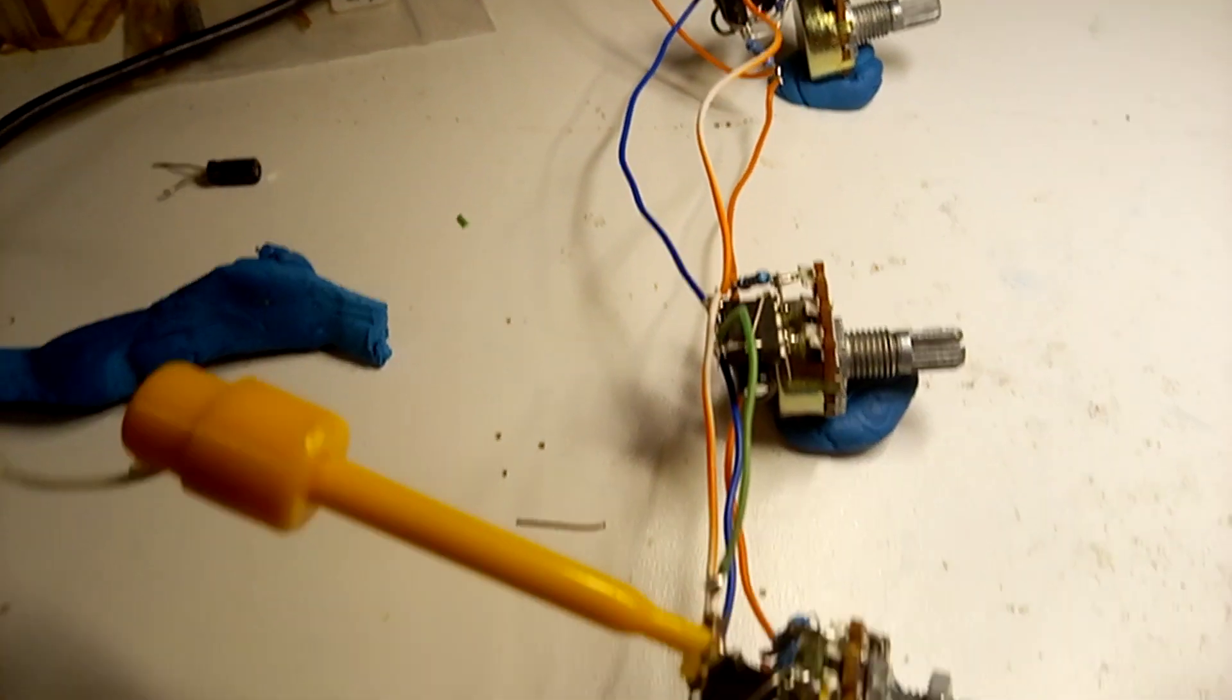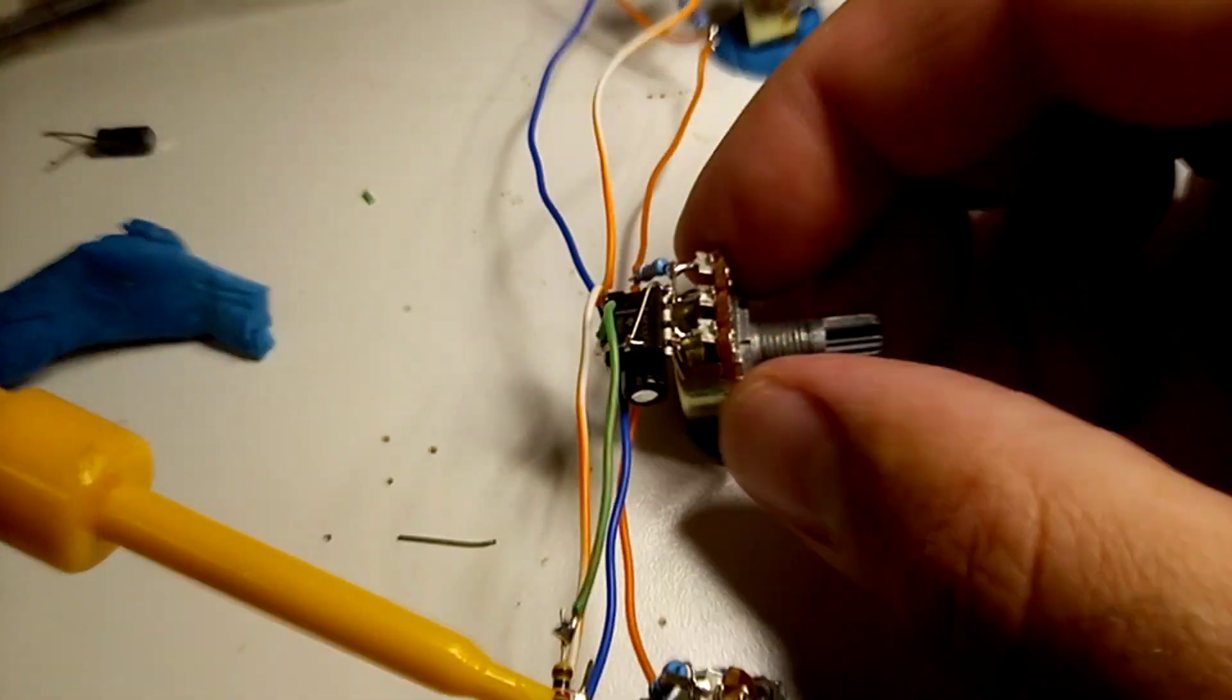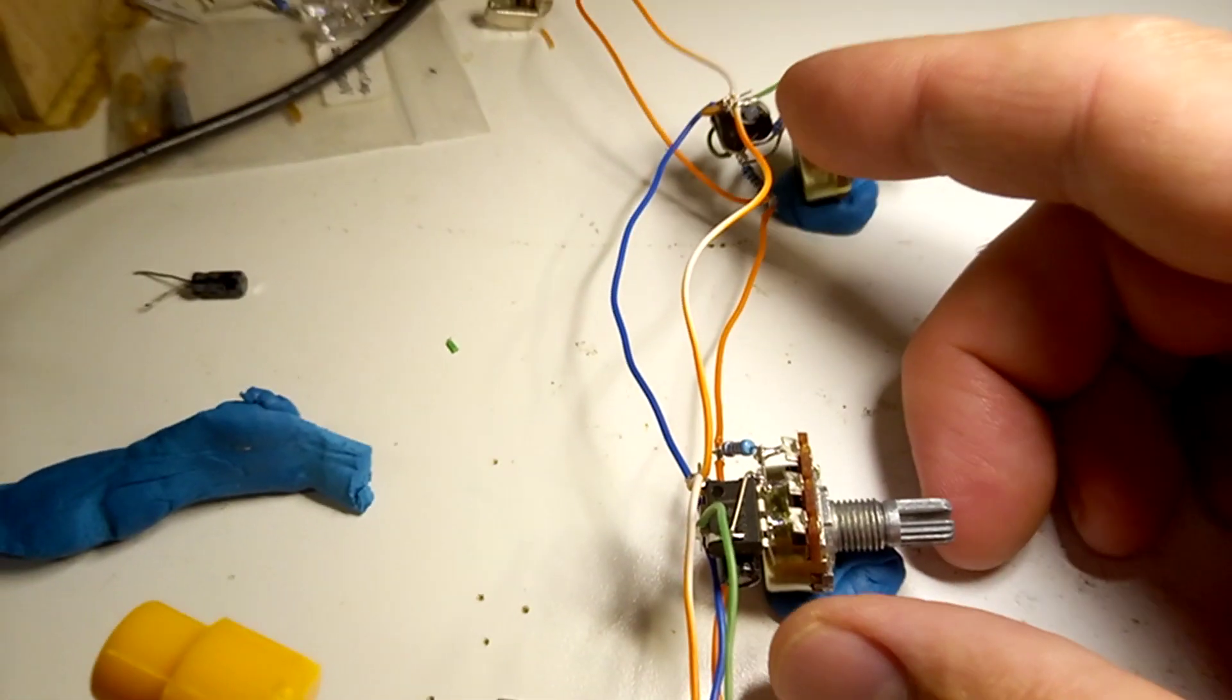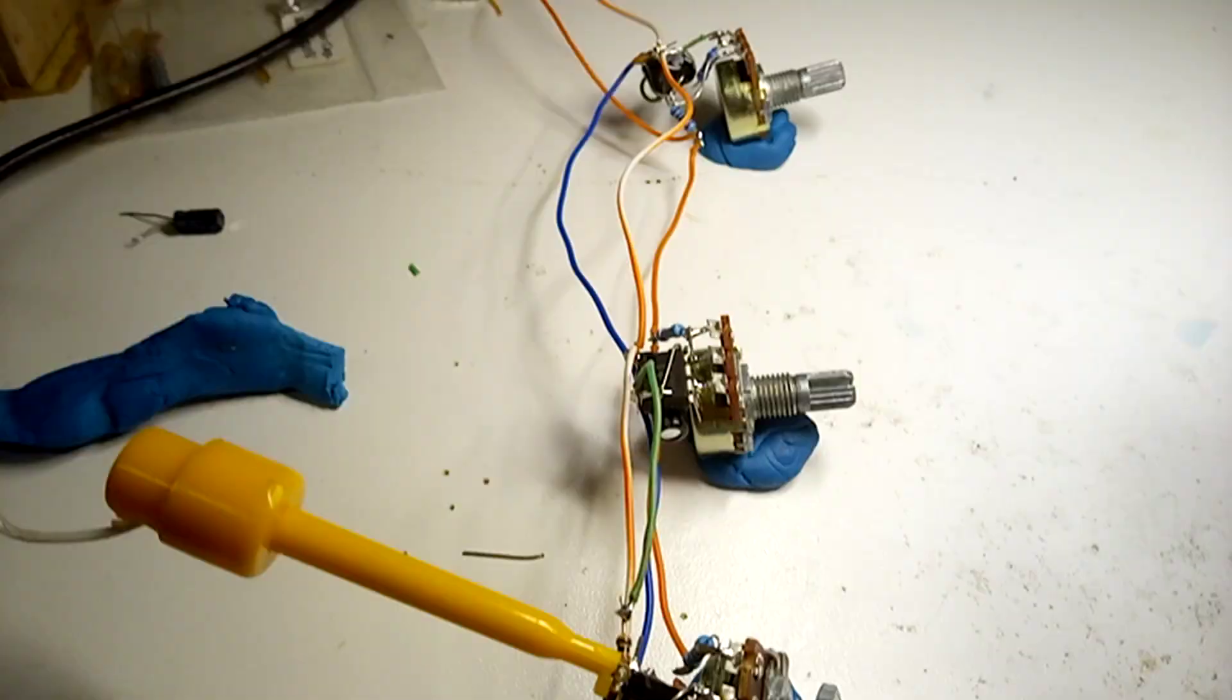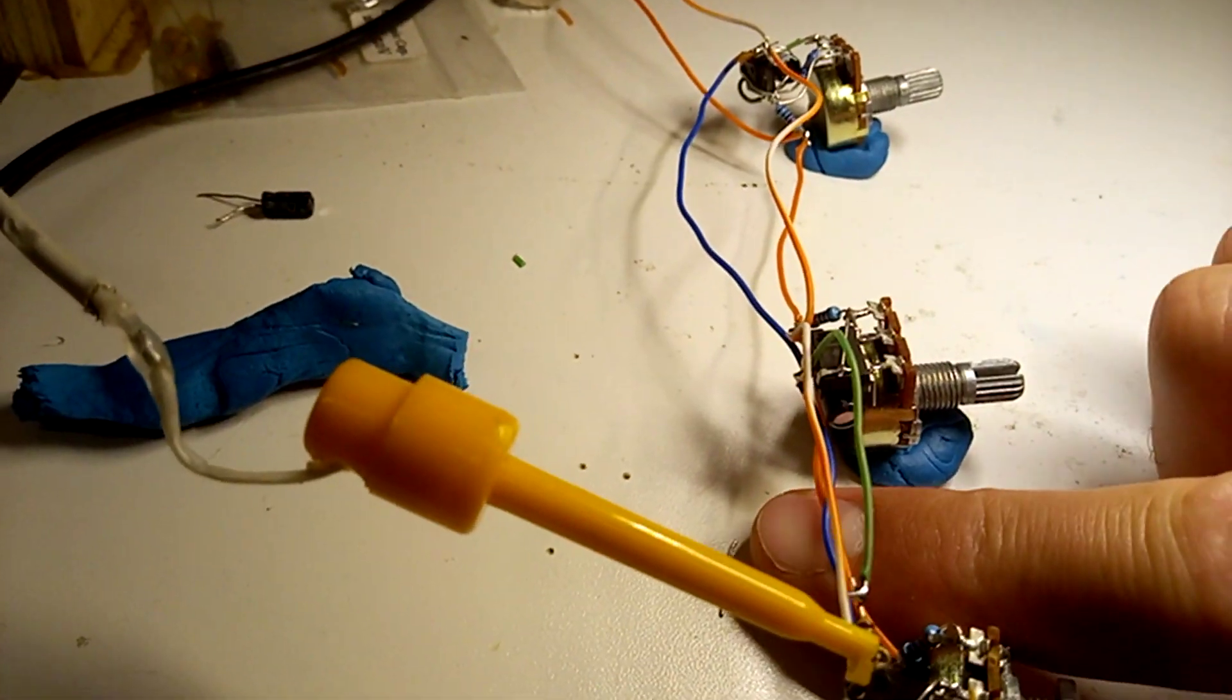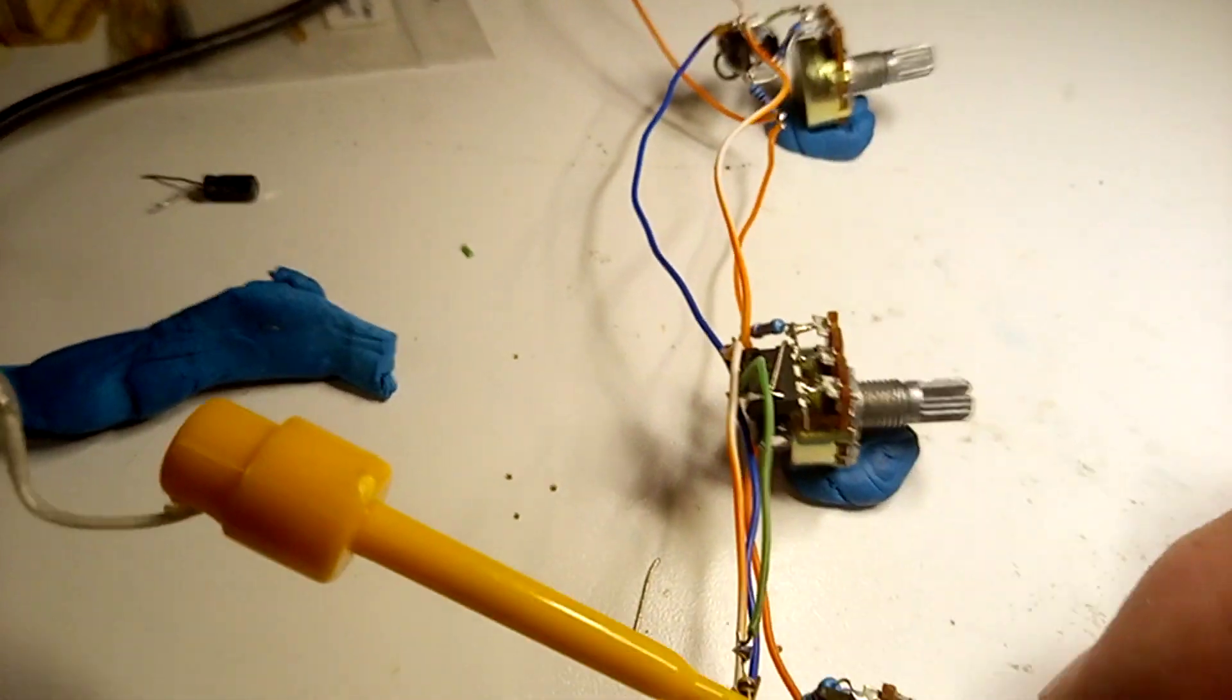And each of these secondary timers are one-shots. When they get triggered by the first timer, by the primary, they make one pulse. And the length of that pulse is dependent on the setting of this potentiometer.